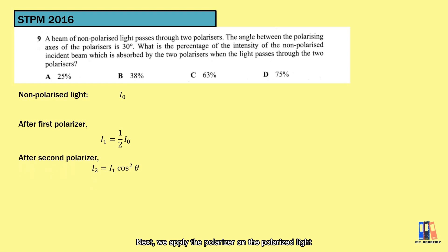Next, we apply the polarizer on the polarized light. Based on Malus's law, the output intensity is the input intensity multiplied by cos² θ. If we want to relate back to the original intensity, just substitute the equation I₁ = ½I₀. The rest is just calculation. You can obtain the final intensity of light is 0.375 of original intensity.